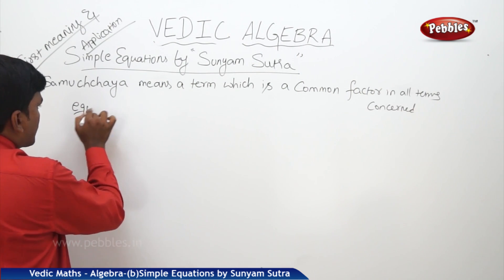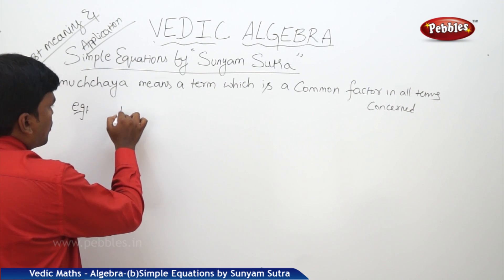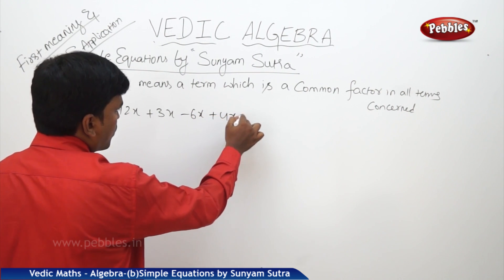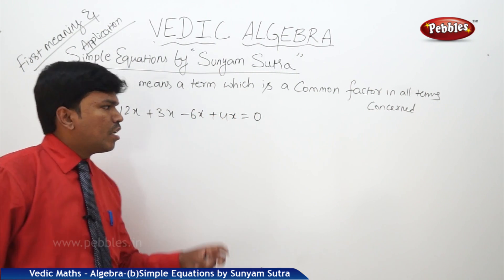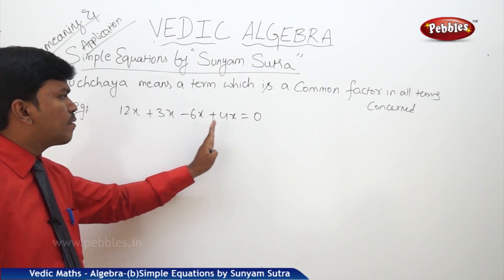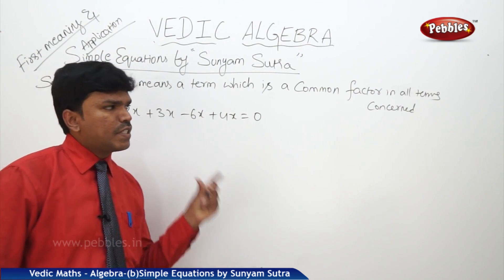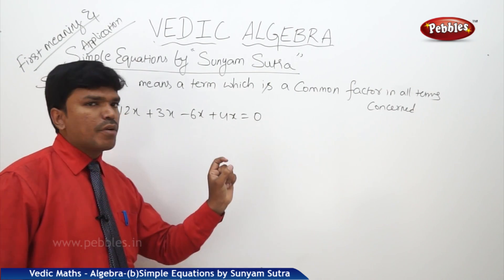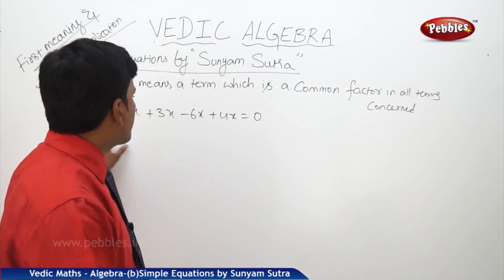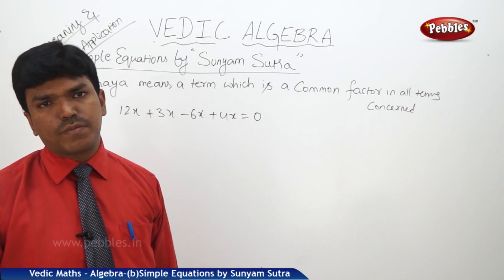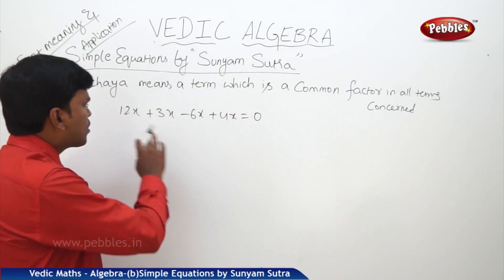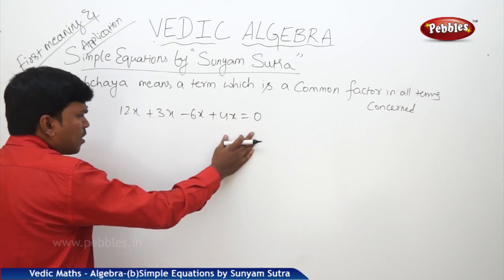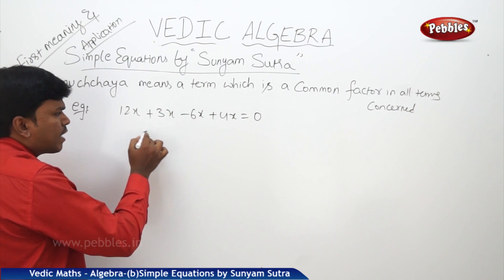Suppose an example is like this: 12x + 3x − 6x + 4x = 0. In this equation, we need to see if there is any common term. In all the terms — 12x, 3x, −6x, 4x — x is a common term of the given equation.